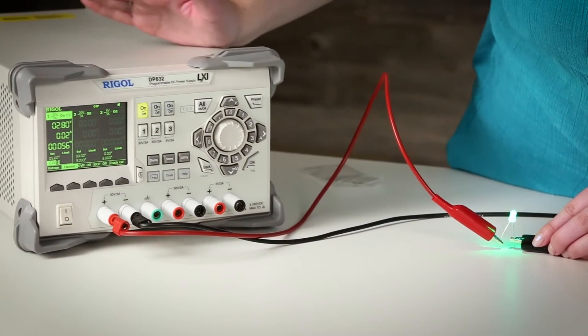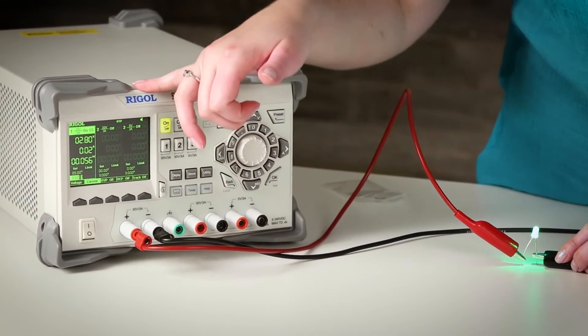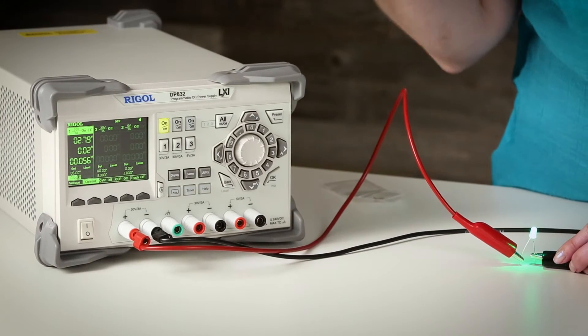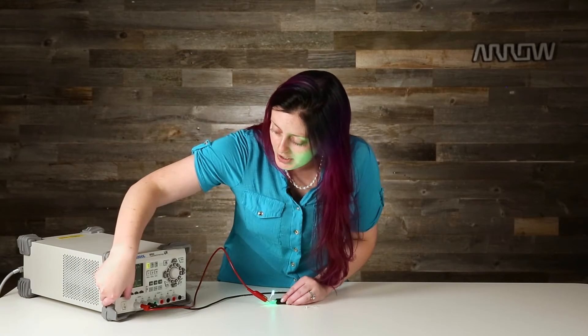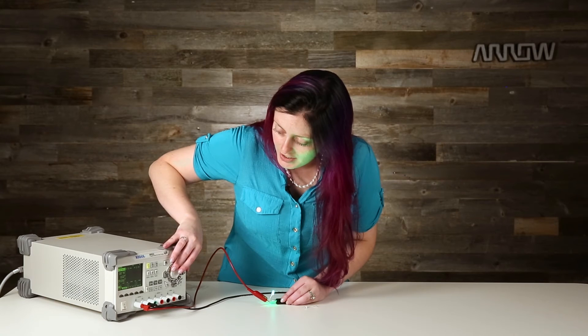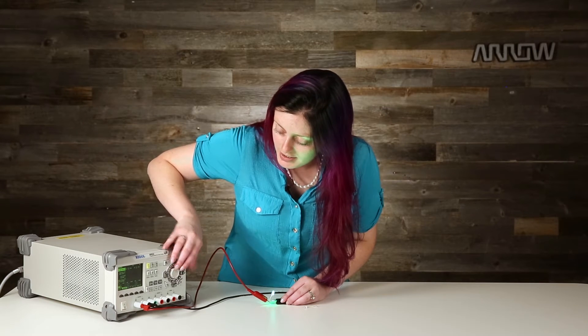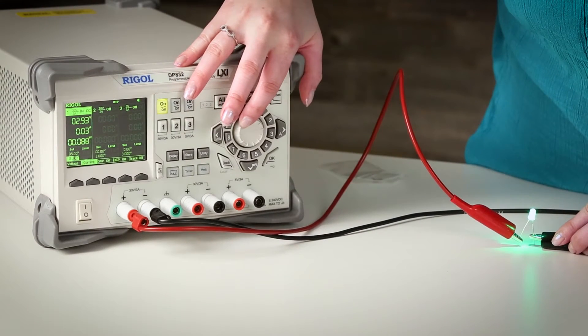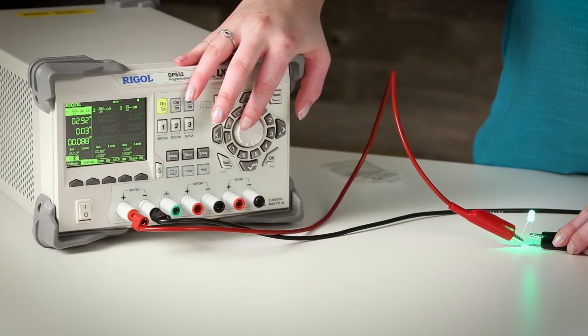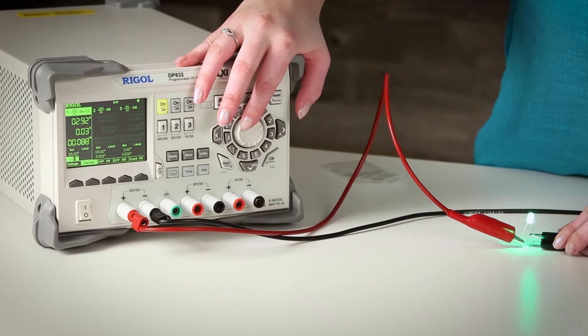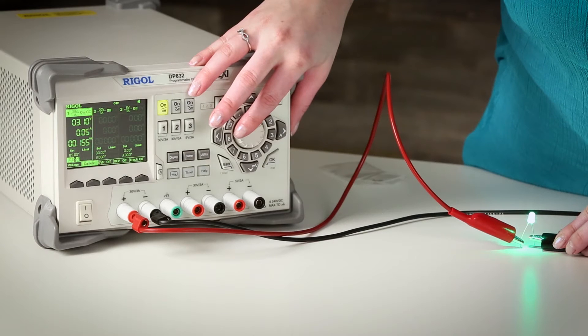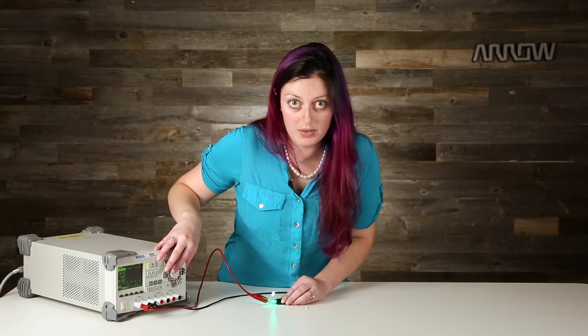You'll see that even though we've given it 5 volts, it's only drawing 2.8 volts because I'm only letting it draw 20 milliamps. If I go to current and start increasing that a little bit, you see that voltage go up because the current is going up. And yet it kind of maxes out.